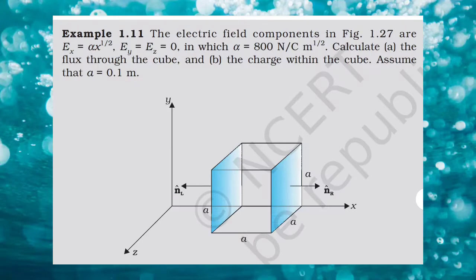Example 1.11: The electric field components are Ex equal to alpha x raised to 1/2, Ey equal to Ez equal to 0, in which alpha is equal to 800. Calculate: first, the flux through the cube, and second, the charge within the cube. Assume small a is equal to 0.1 meter.